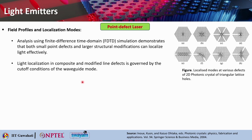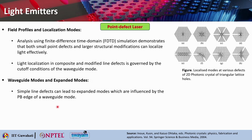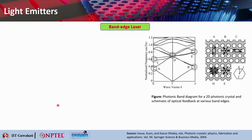Light localization in composite and modified line defects is governed by the cutoff conditions of the waveguide mode. Simple line defects can lead to expanded modes influenced by the photonic band edge of a waveguide mode. Now we will look into band edge lasers. This is a photonic band diagram for a 2D photonic crystal, and we will see the schematic of optical feedback at different band edges, marked as A, B, C, D, and E.